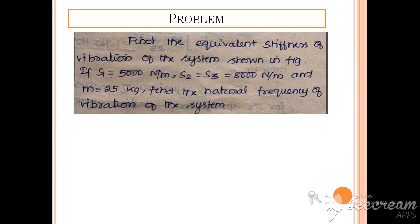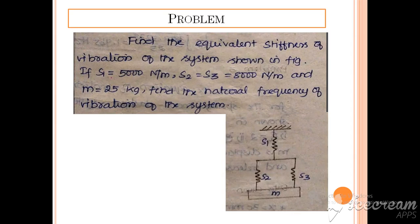In this problem, it is asked to find the equivalent stiffness of vibration of the system shown in the figure, if S1 = 5000 N/m, and spring stiffness of springs S2 and S3 = 8000 N/m, and mass M = 25 kg. Find the natural frequency of vibration of the system.